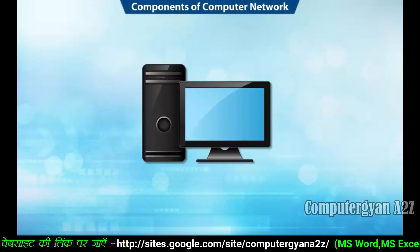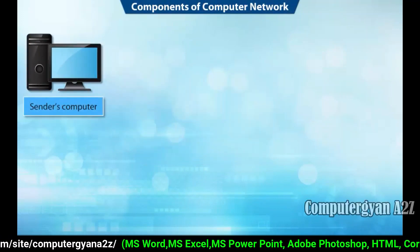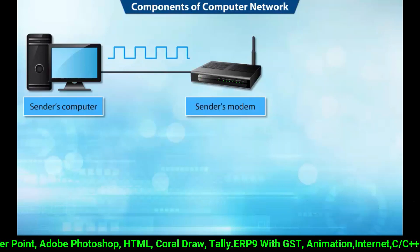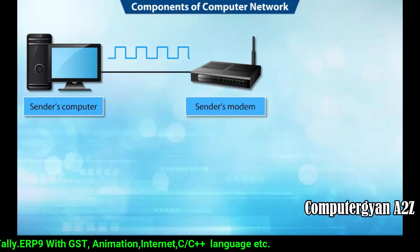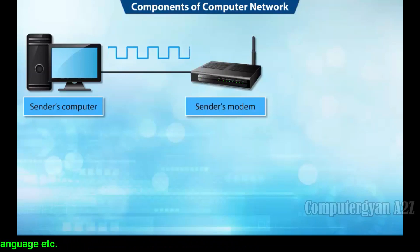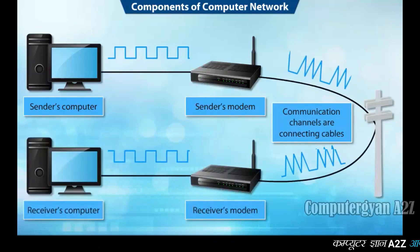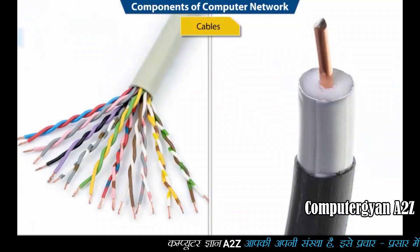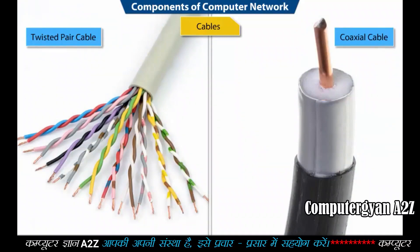Components of a computer network connected via telephone cables include the sender's computer and sender's modem. A modem is an electronic device that converts a digital signal to analog using its modulator, and analog signal to digital using its demodulator. A modem facilitates the transmission of data to and from a computer via telephone cables or other communication lines. Communication channels are connecting cables: twisted pair cables, coaxial cables, and optical fiber are the different types.